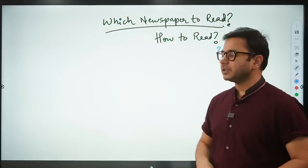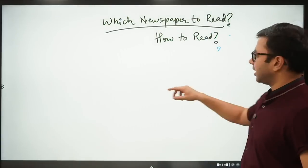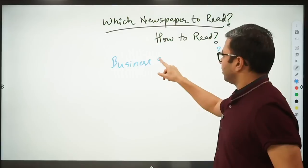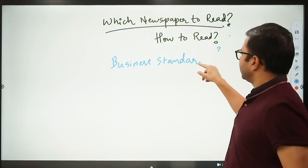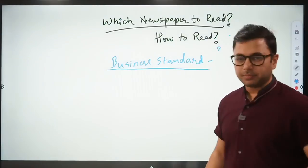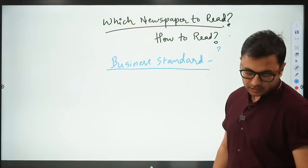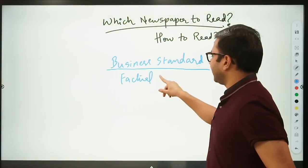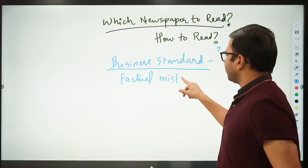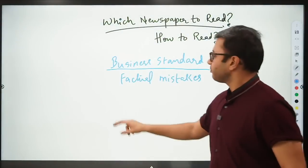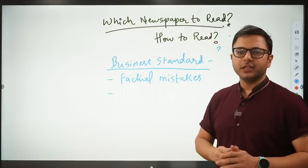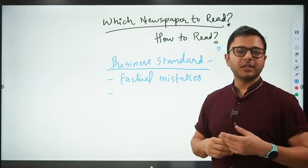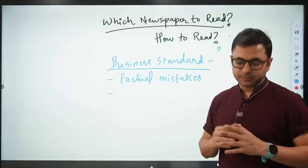I have picked out two-three newspapers and will tell you the positives and negatives. First, Business Standard. What are the positives and negatives? Number one, problem that this newspaper has is factual mistakes. This newspaper has factual mistakes. Because probably they are in a lot of hurry to come out with the news.